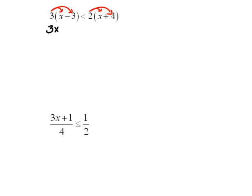So when we do our distribution, we get 3x minus 9 is less than 2x plus 8. Now we can continue moving things so that like terms are together. We need to get this 2x over with the 3x so we can combine those like terms. So let's subtract 2x doing the opposite of it.